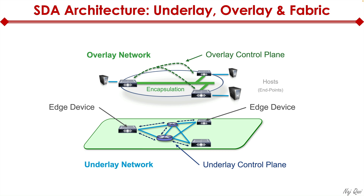The encapsulation happens when a packet enters the network. When a packet from a server comes into a switch, the switch performs an encapsulation procedure — it takes the packet coming off a VLAN or trunk link and encapsulates it into VXLAN. Throughout the fabric, that packet is a VXLAN packet. When it's ready to exit and be handed to an endpoint, the switch decapsulates the VXLAN header and looks at the VLAN information to move the packet along.